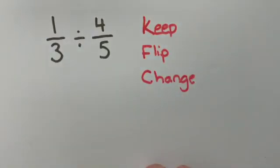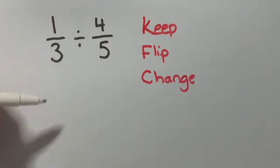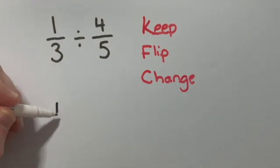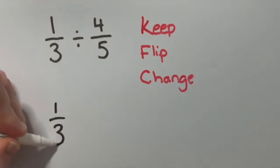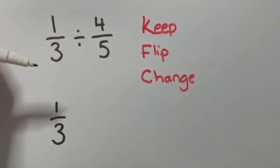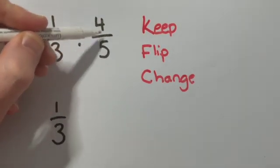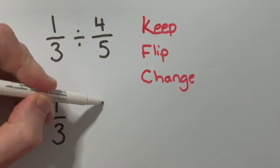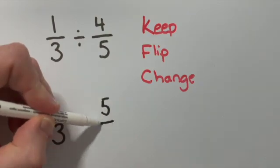And that is the method we're going to use to divide our fraction. So the keep means we keep the first one the same. So we're going to have 1 over 3 as in the original. The flip means we flip the second fraction upside down. In other words, we inverse it.